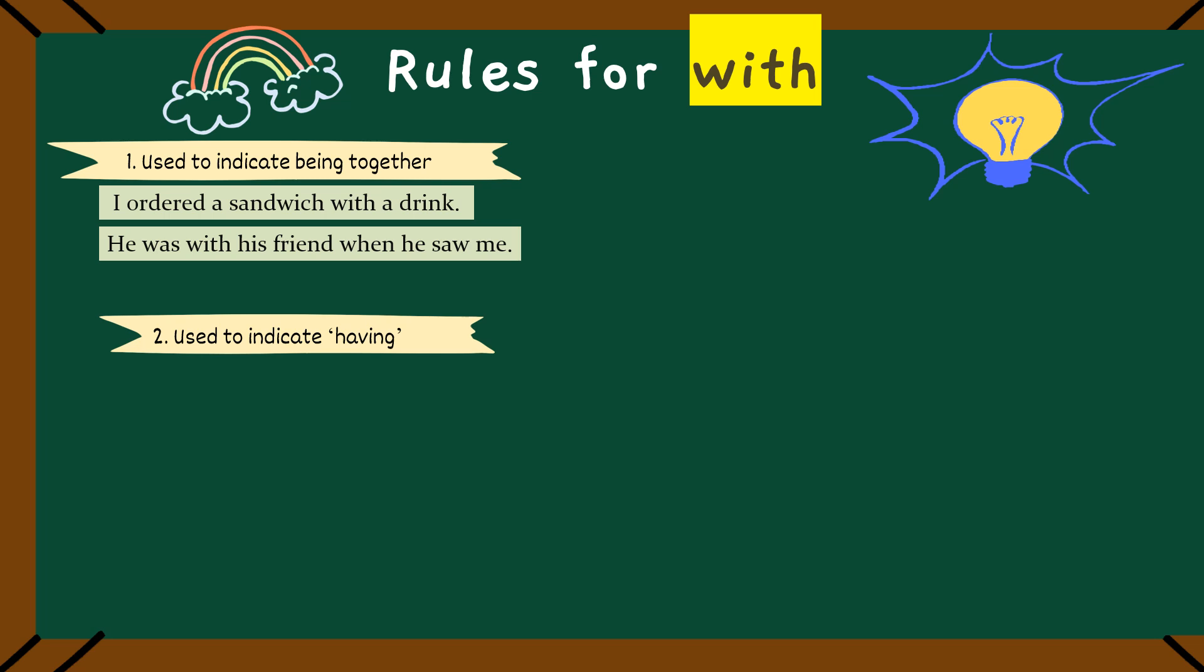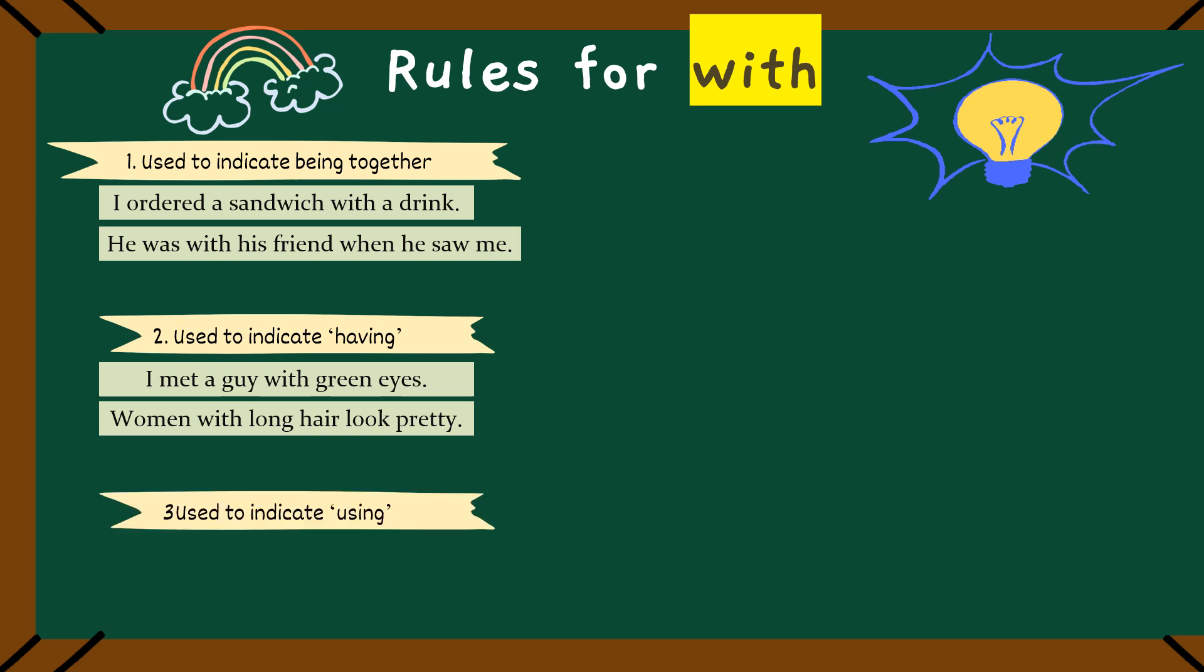With is also used to indicate having. With can also mean having something. Like, I met a guy with green eyes. Oh, green eyes. This means the guy has green eyes. Another one: woman with long hair look pretty. So, here with means that the woman had long hair. See how that works.